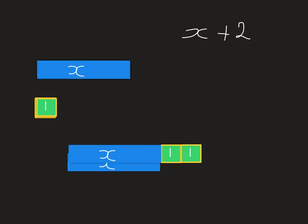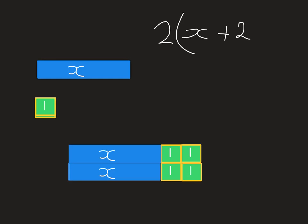So if I had another one of x plus 2, what would that be? So if I had 2 of these, that is 2x, and I've got 4.